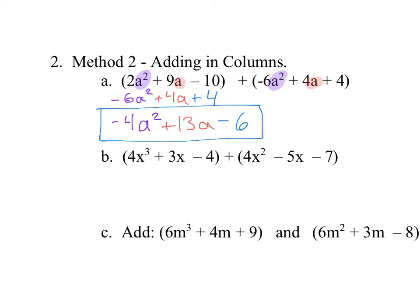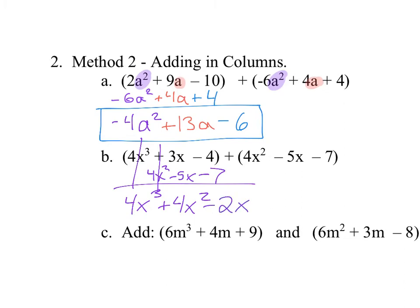For the next one I'll line them up again. Notice I don't have a 4x cubed — I have a 4x squared — so I place 4x cubed in the first column with nothing below it. Adding down: 4x cubed stays; plus 4x squared; 3 minus 5 is minus 2x; minus 4 and minus 7 is minus 11. That's my final answer.